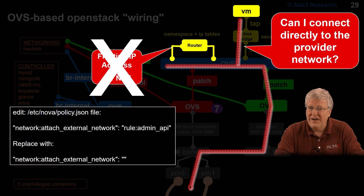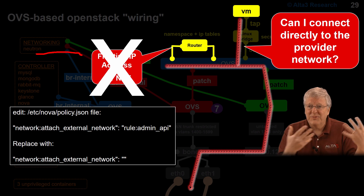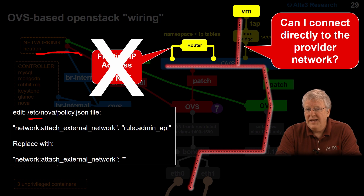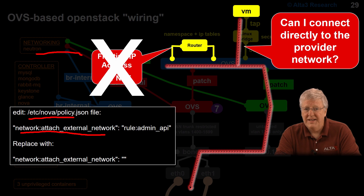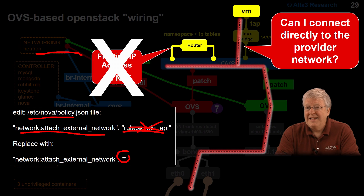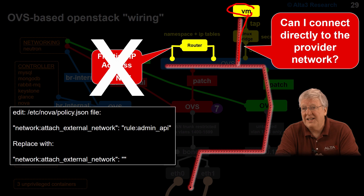A common question is: can I connect directly to the provider network? I don't want this floating IP address — we're an enterprise, we don't do that; this is like Amazon Elastic IP and we're considerably smaller. The answer is yes, of course you can, but we'll have to tweak a few things. In the /etc/nova/policy.json file, find the rule titled network:attach_external_network and remove the admin-only restriction, leaving nothing but those two quotation marks. Once this rule is applied, tenants will be allowed to attach the virtual machine directly to the provider network, skipping the floating IP address and making it look like a classic VMware deployment.